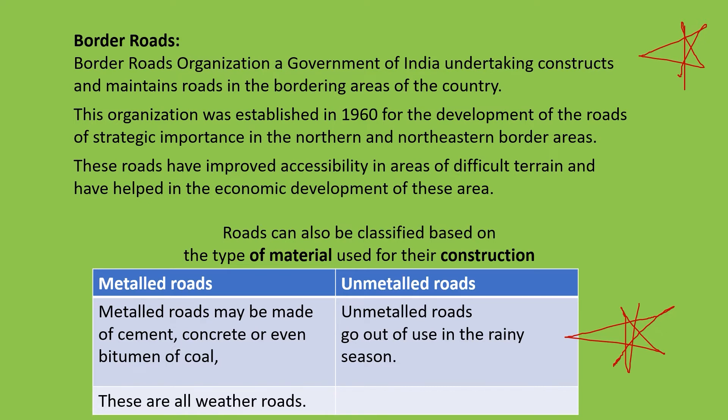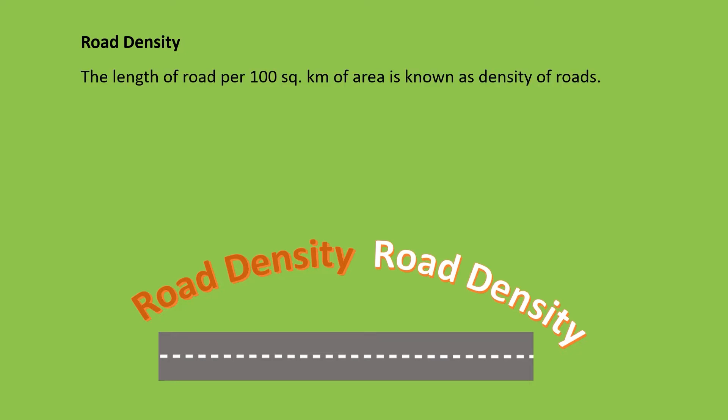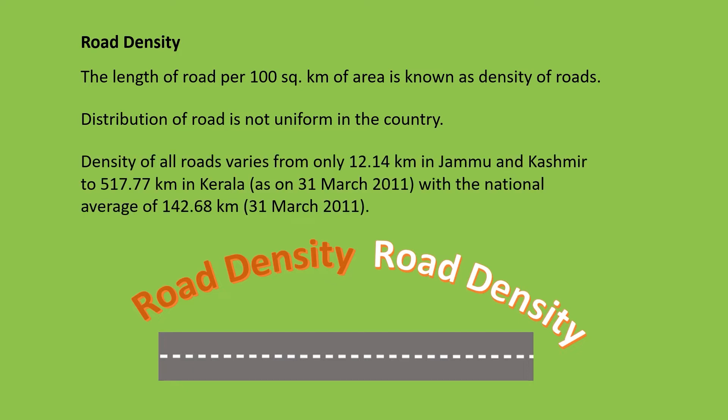They will ask about metalled and unmetalled roads in the exam for two markers. Road density: the length of road per 100 square km of area is known as the density of road. Distribution of roads is not uniform in the country. Density varies from only 12.14 km in Jammu & Kashmir to 517.77 km in Kerala as on 31st March 2011, with a national average of 142.68 km.